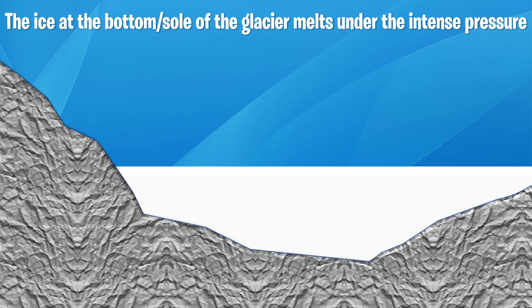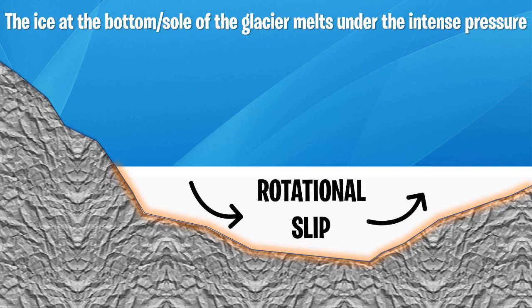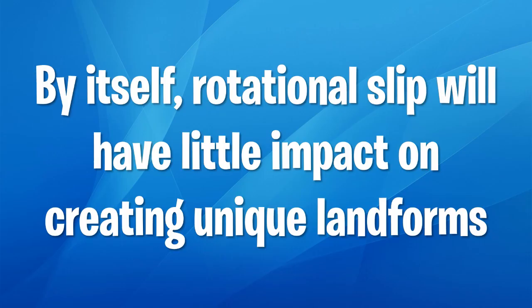The ice at the bottom — the sole of the glacier — melts under intense pressure, so the base starts to melt. This leads to what's called rotational slip. Think of how it's possible to slip in a chair while sitting on it — if it's slippery on the bottom, it's liable to pivot out and slip. But by itself, rotational slip will have little impact on creating unique landforms, because the rock is much stronger than the ice, so as it slips, nothing's really going to change.